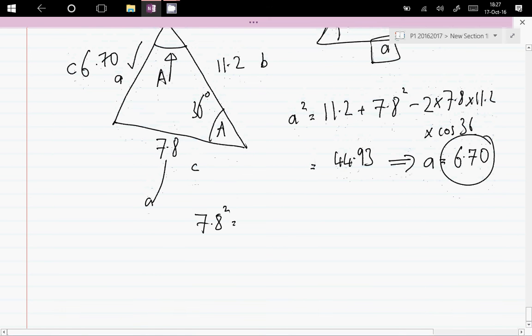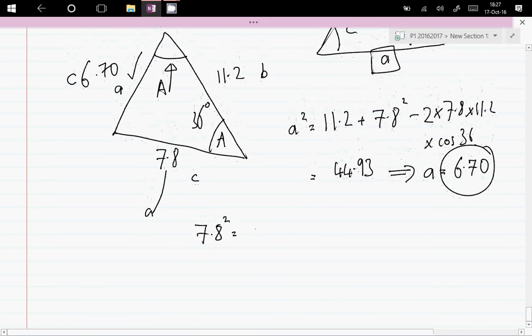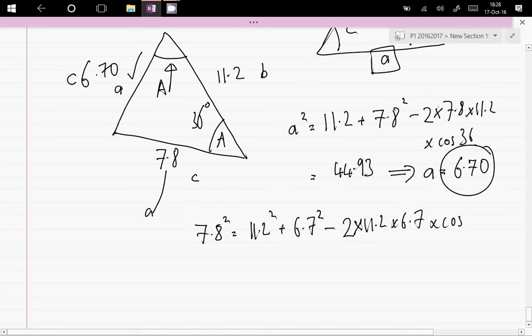And so we solve: 7.8 squared equals 11.2 squared plus 6.7 squared minus 2 times 11.2 times 6.7 times cosine A. So we're just going to solve that: 7.8 squared minus 11.2 squared minus 6.7 squared, divide by 2, divide by 11.2, divide by 6.7. And we have 0.7295 equals cosine A.